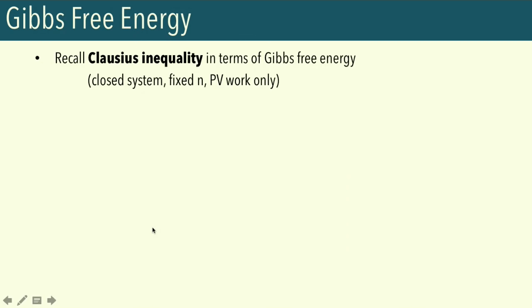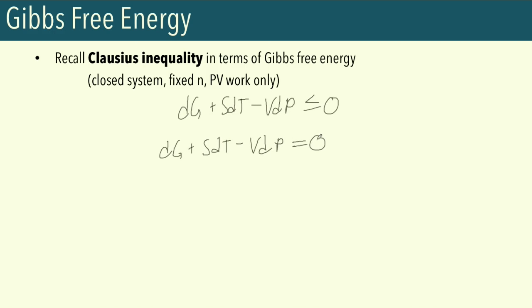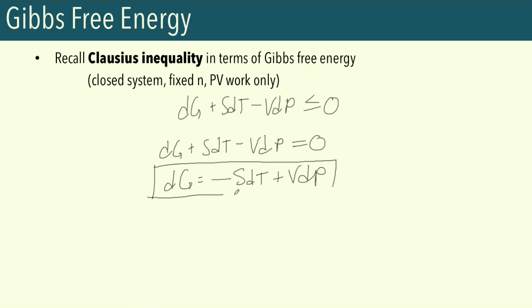Let's recall some of the derivations from our last lecture. We've been limiting our discussion to closed systems with fixed composition and with just PV work. For these types of systems, we could write DG + SDT − VDP ≤ 0 for spontaneous processes. For systems in equilibrium, DG + SDT − VDP = 0. So we could rewrite an expression for DG as DG = −SDT + VDP. This is the Gibbs equation for Gibbs free energy, which corresponds to an equilibrium state.